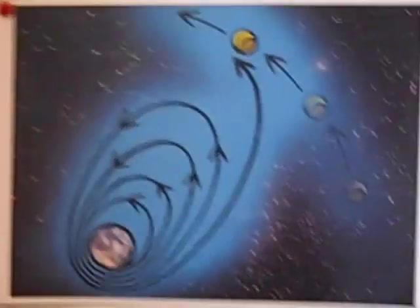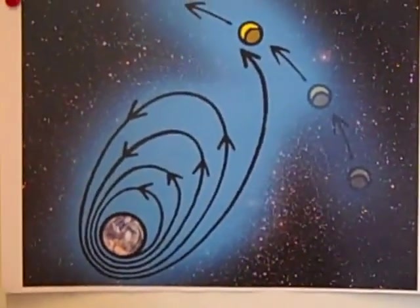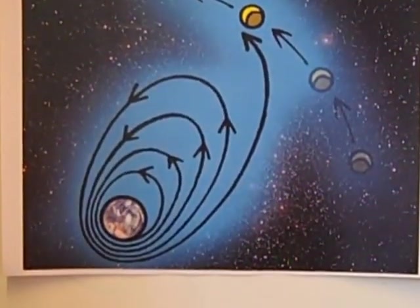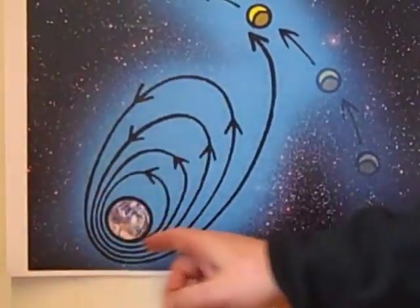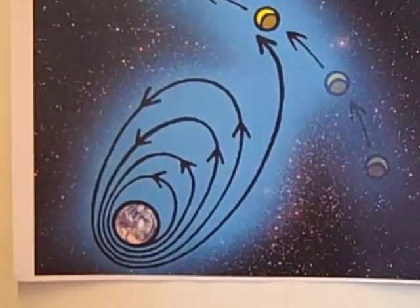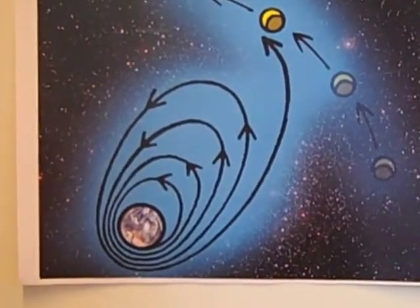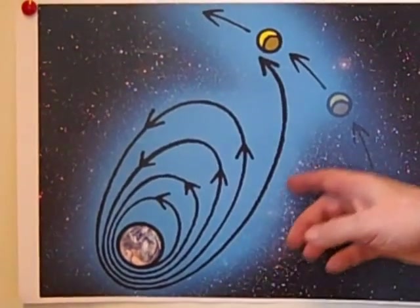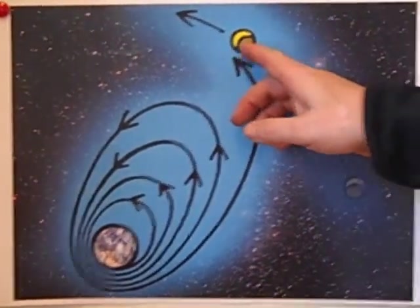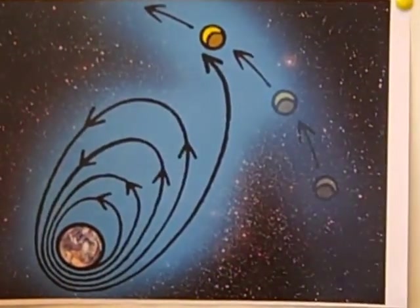Because the ion engine is rather a weak engine, it needs a significant number of turns around the Earth, making each ellipse a little bit more elongated, until in principle we get all the way out to be able to go close to the Moon.